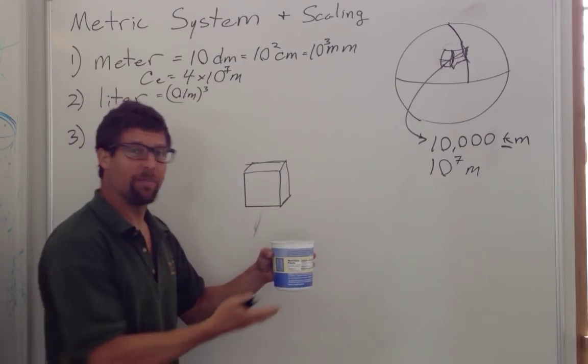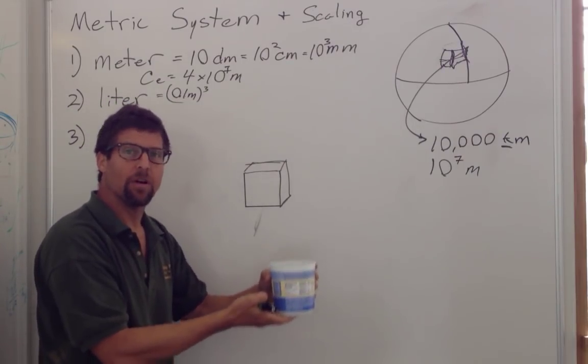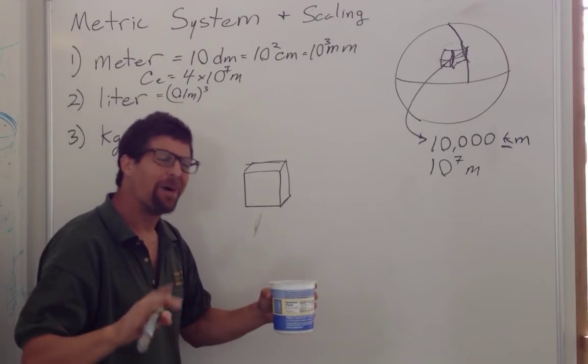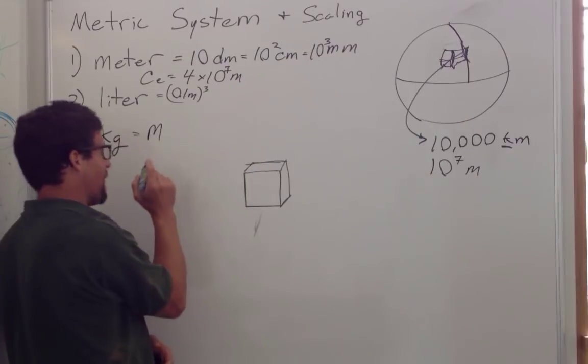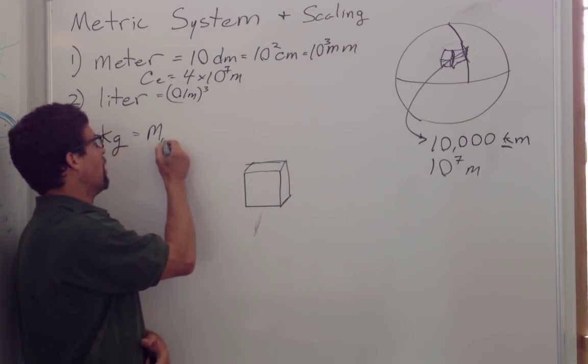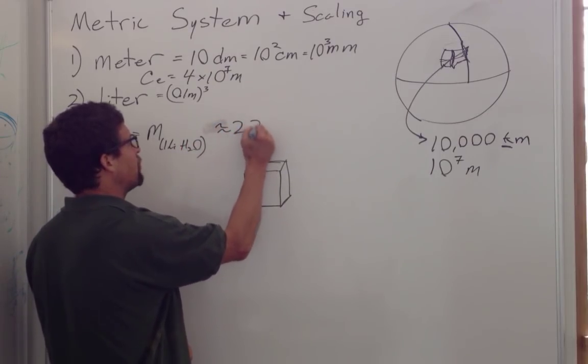The unit of mass, the kilogram, is defined as the mass of one liter of water, about the same as the mass of one liter of yogurt. A kilogram is the mass of one liter of H2O. This is about 2.2 pounds.